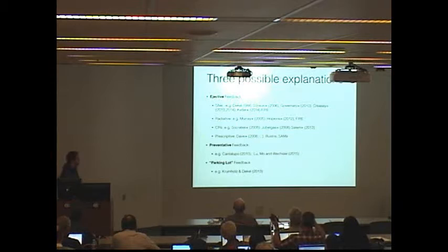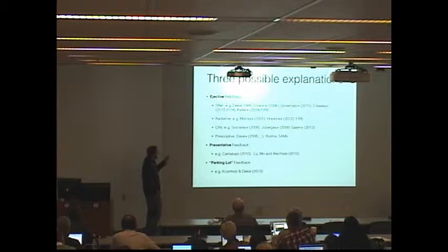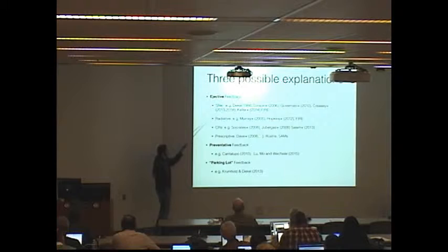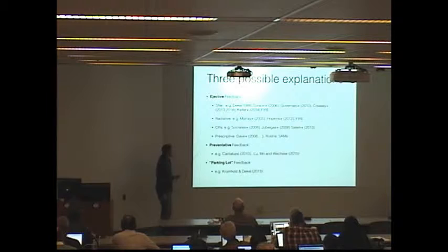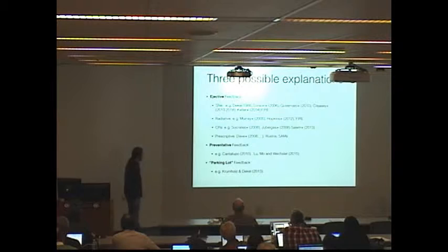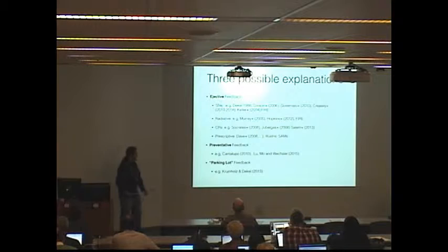All of these possibilities have been discussed in the literature. The one where you remove gas is sometimes called ejective feedback, and there are many different flavors. Supernovae are the most popular since the 80s. But more recently, people have proposed radiative feedback from pressure on dust grains and a similar mechanism for cosmic rays. Of course, the most common thing to do is just put it in by hand in our simulations. There's also preventative feedback and parking lot feedback where the gas is just hanging around.